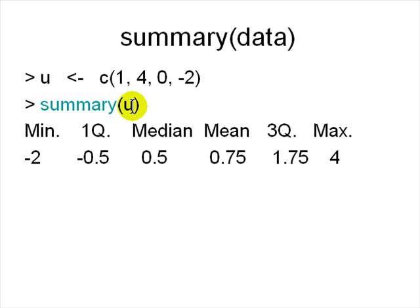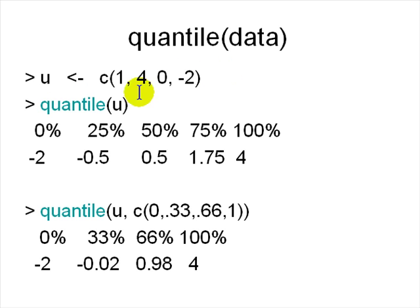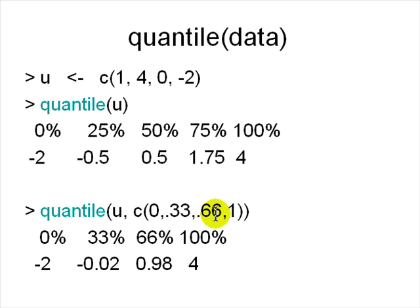The first function to look at is summary(). Given the object u containing four elements, 'summary(u)' prints: minimum is -2, first quartile is -0.5, median is 0.5, mean is 0.75, third quartile is 1.75, and maximum is 4. Then you can look at quantiles — 'quantile(u)' at 0%, 25%, 50%, 75%, 100% — and you can supply your own percentages like 0.33, 0.66, and 1.